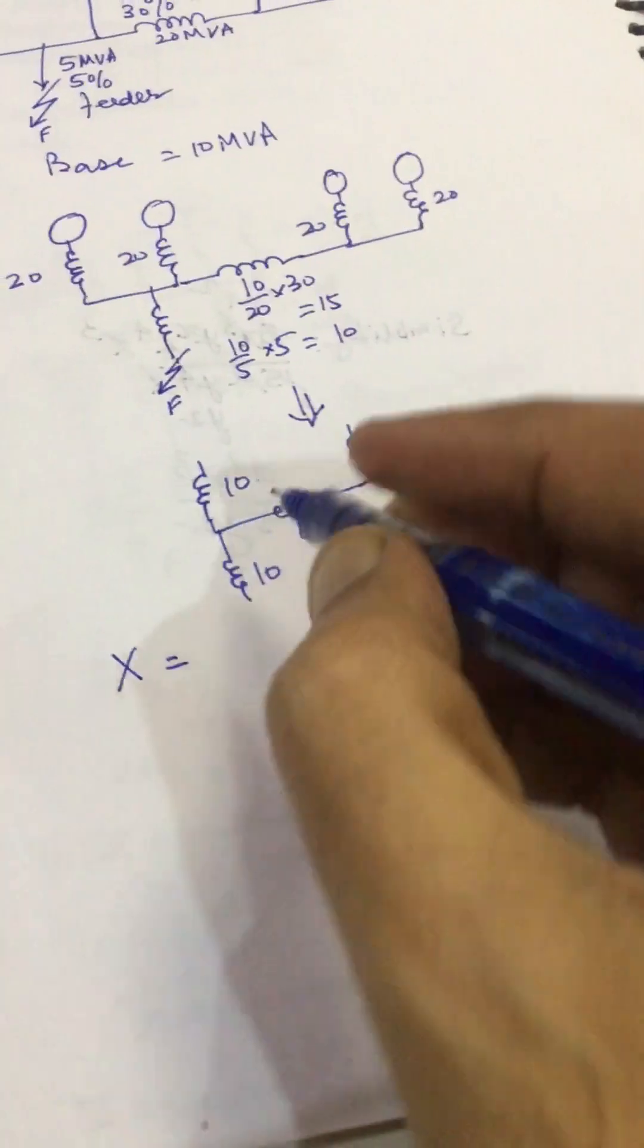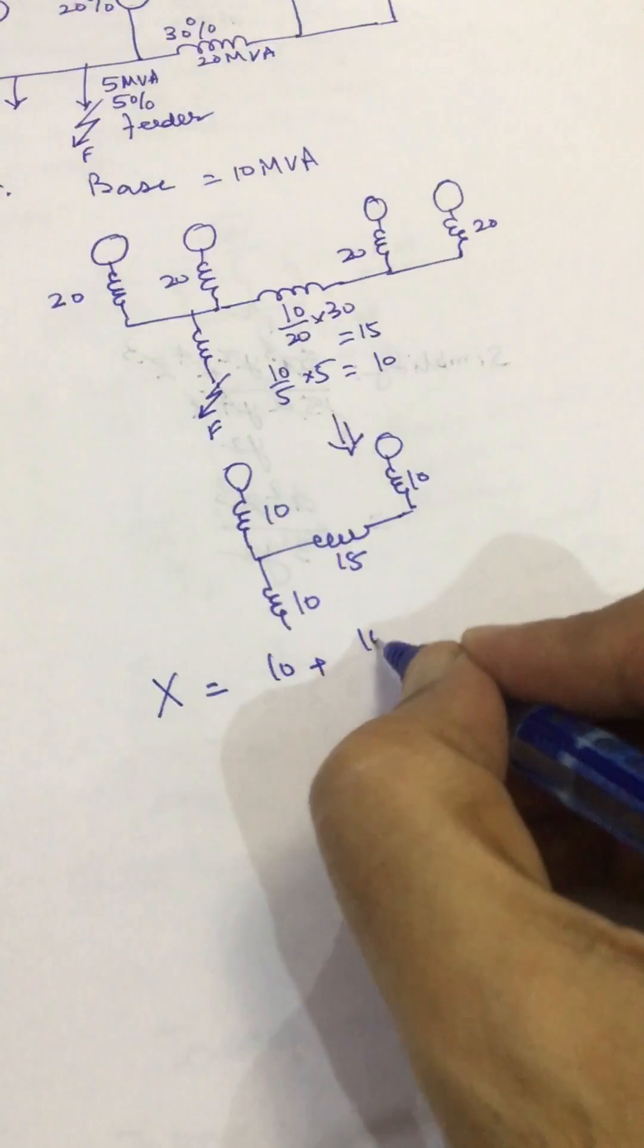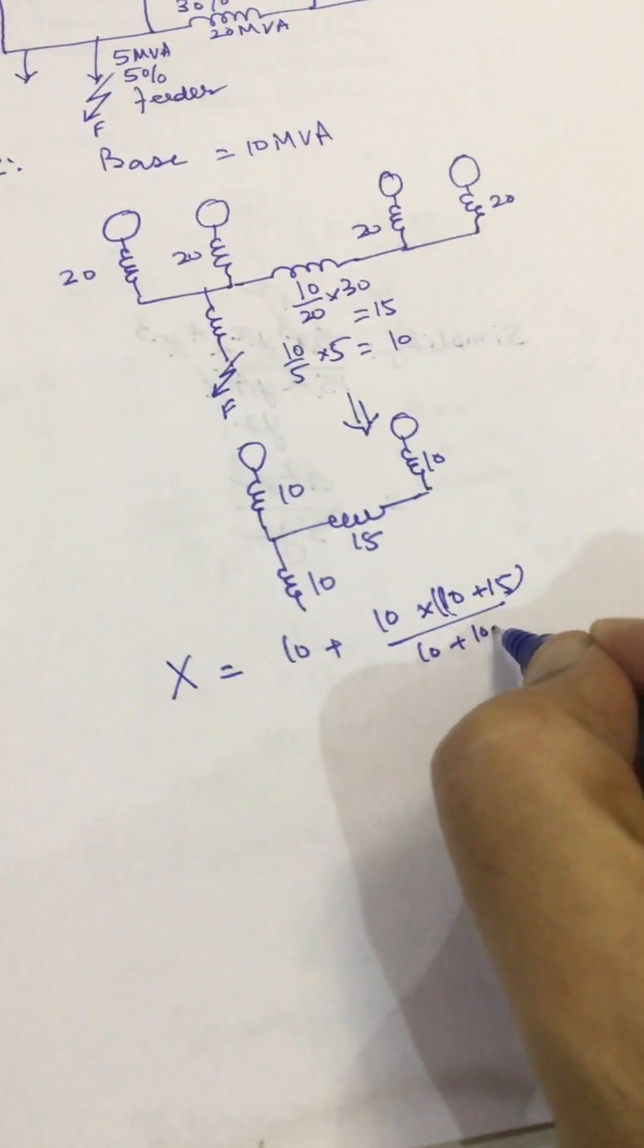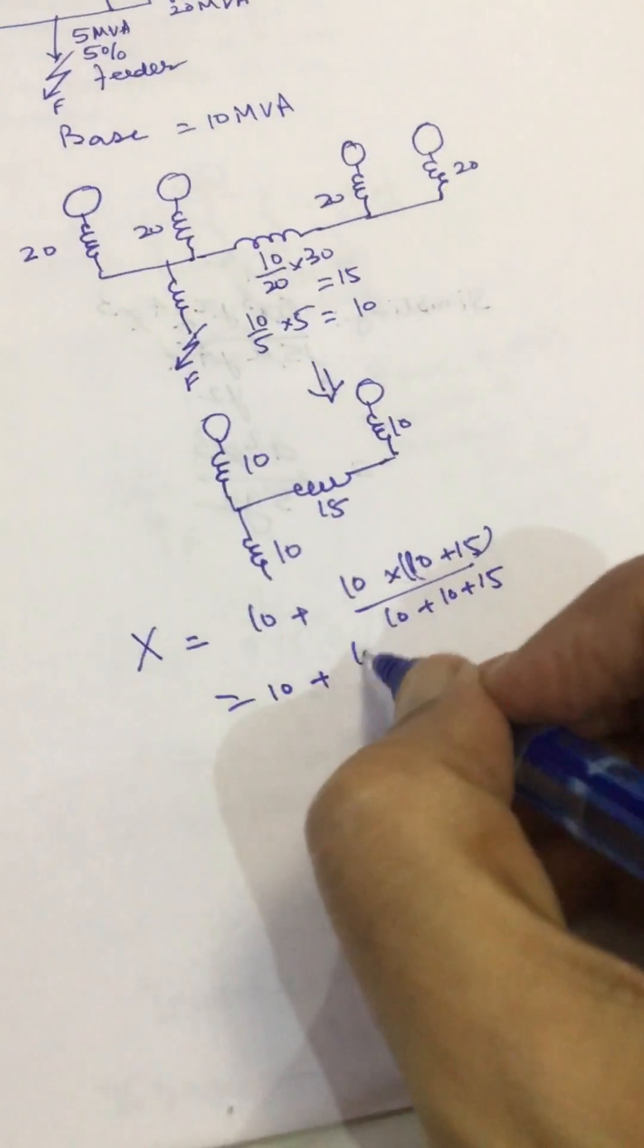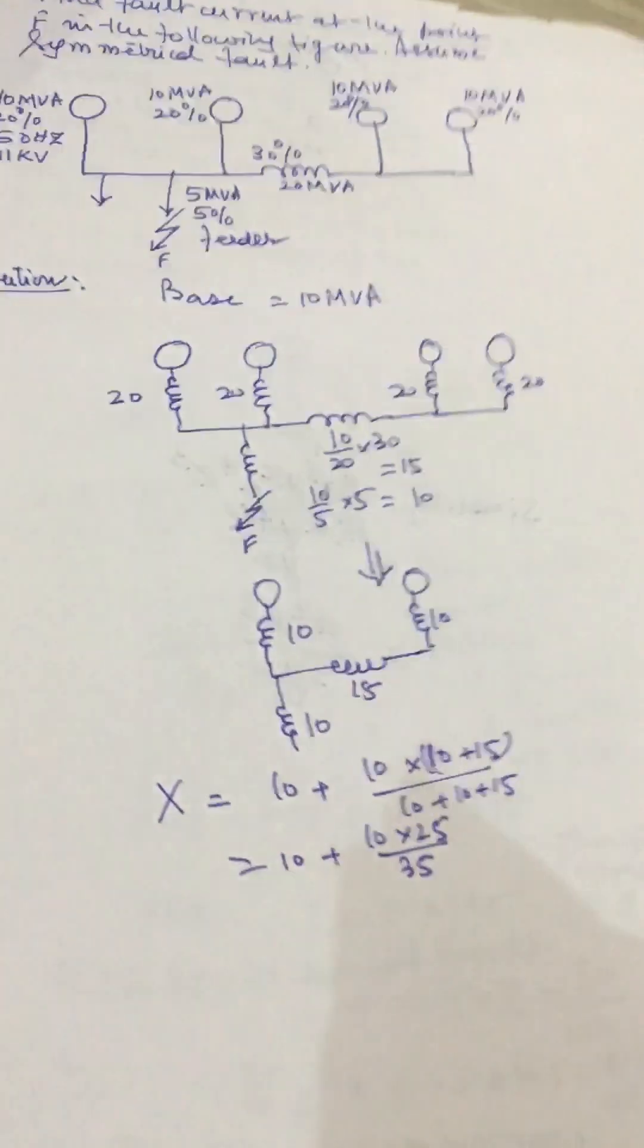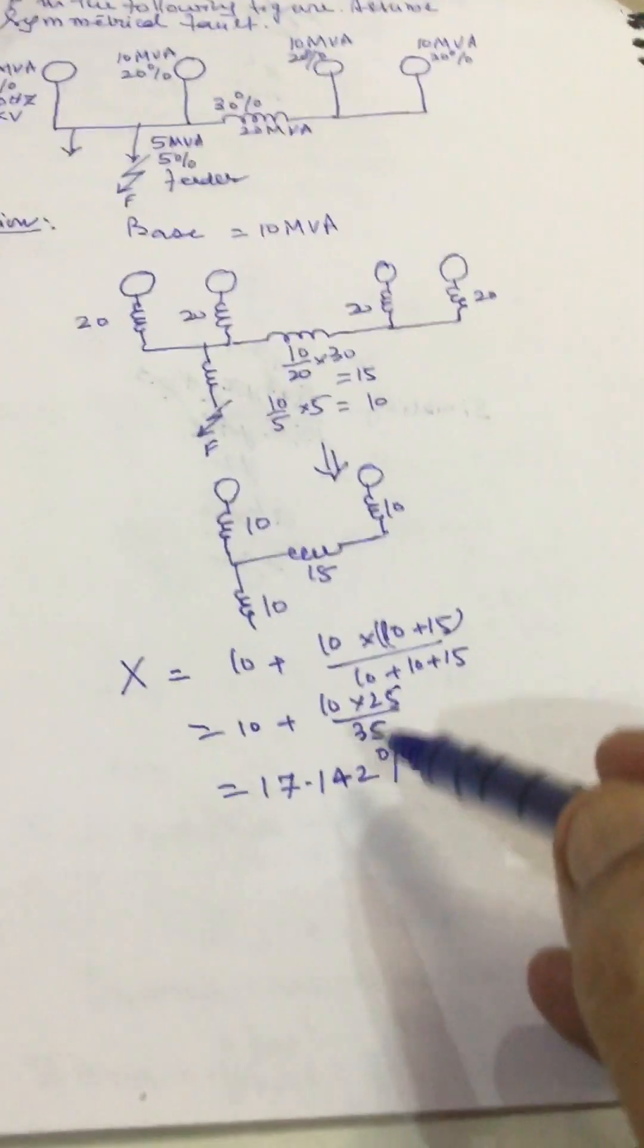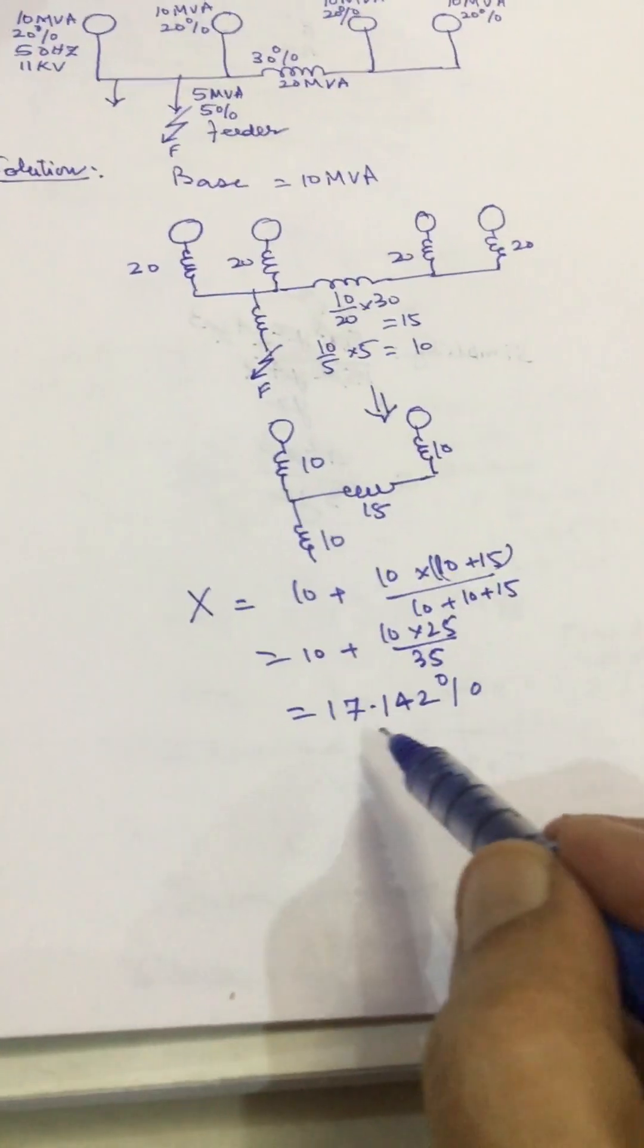Reactance up to fault from generating point up to fault: we have 10 plus 10 into 15 divided by 10 plus 15 equal to 10 plus 10 into 15 divided by 25, which equals 10 plus 250 divided by 25. If we simplify it then we get 17.142 percent. From generating point up to the fault the reactance is 17.142 percent.